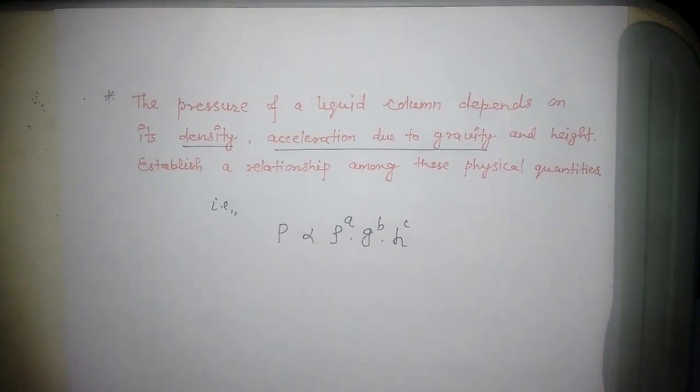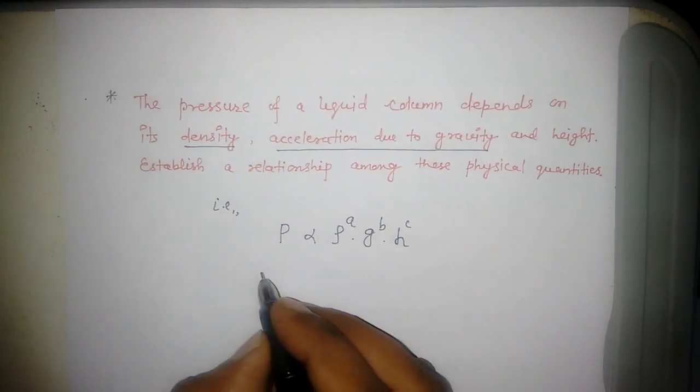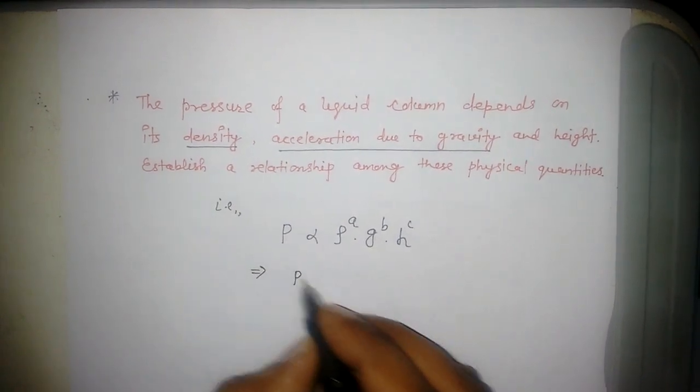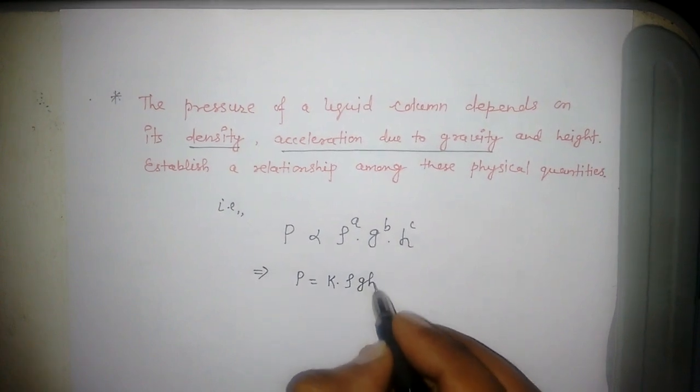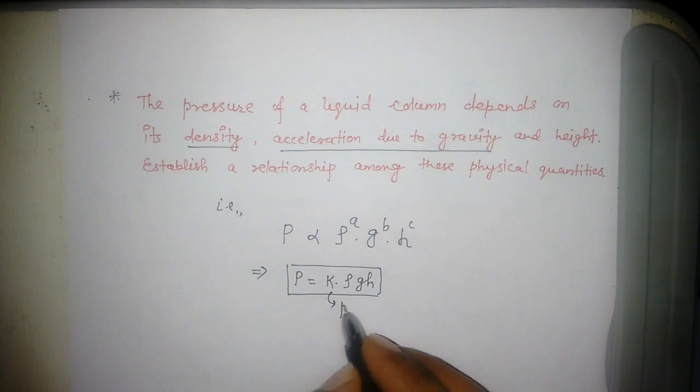We will find the values of a, b, and c. This implies P = K ρ^a g^b h^c, where K is the proportionality constant.